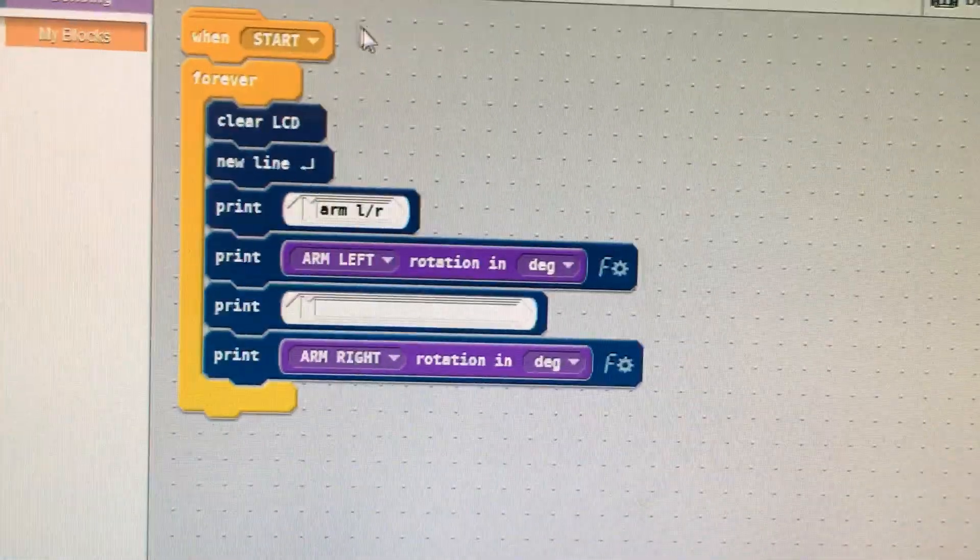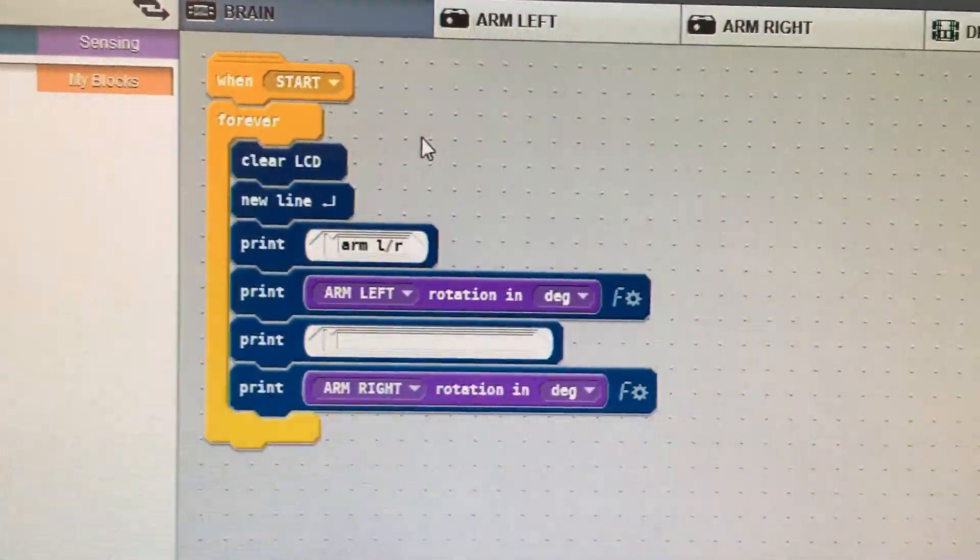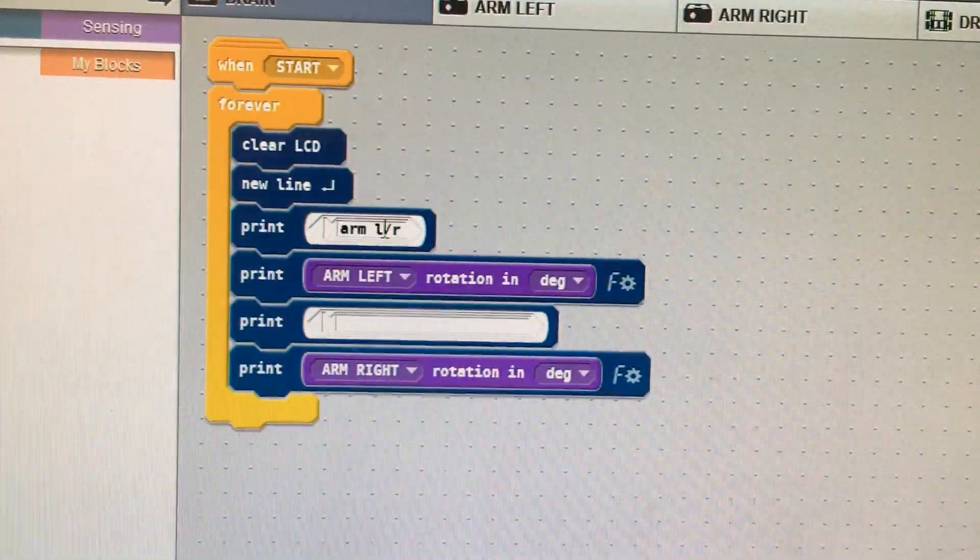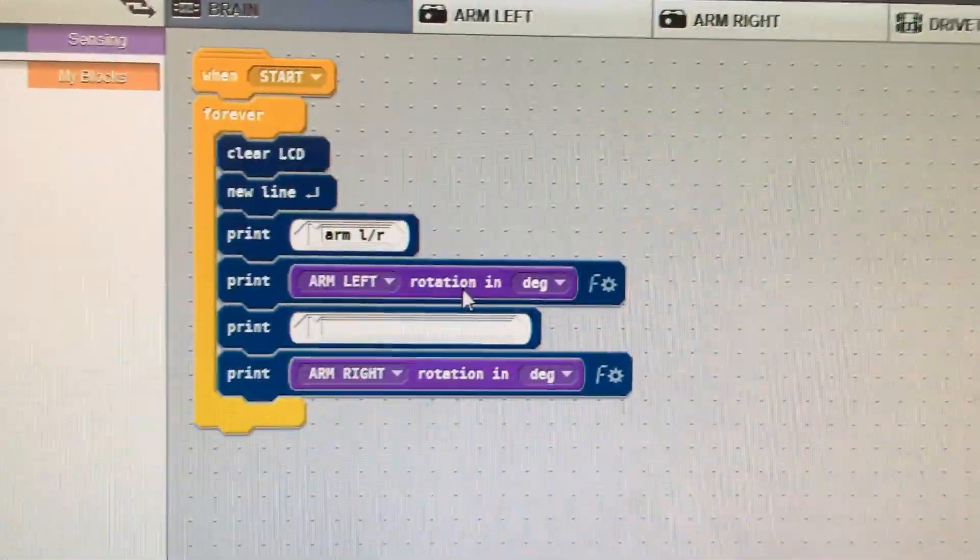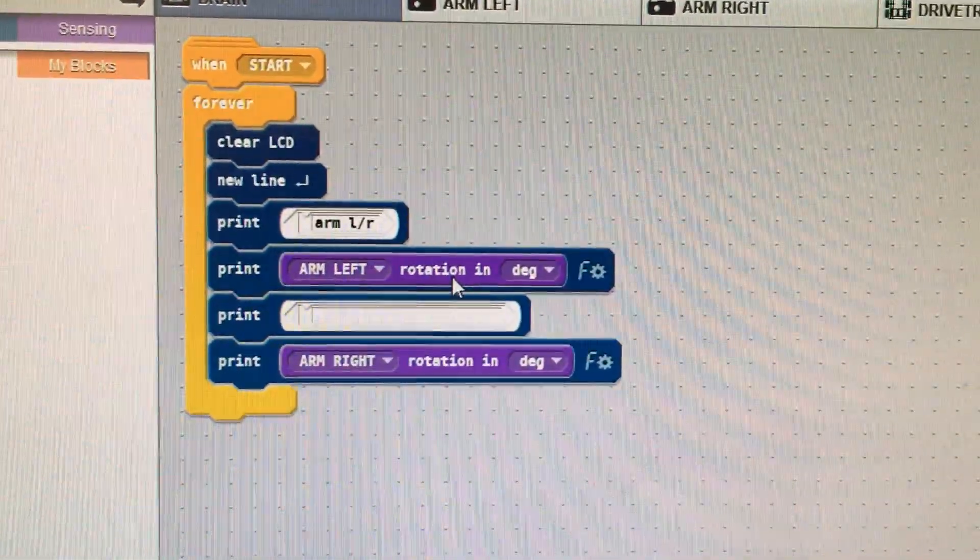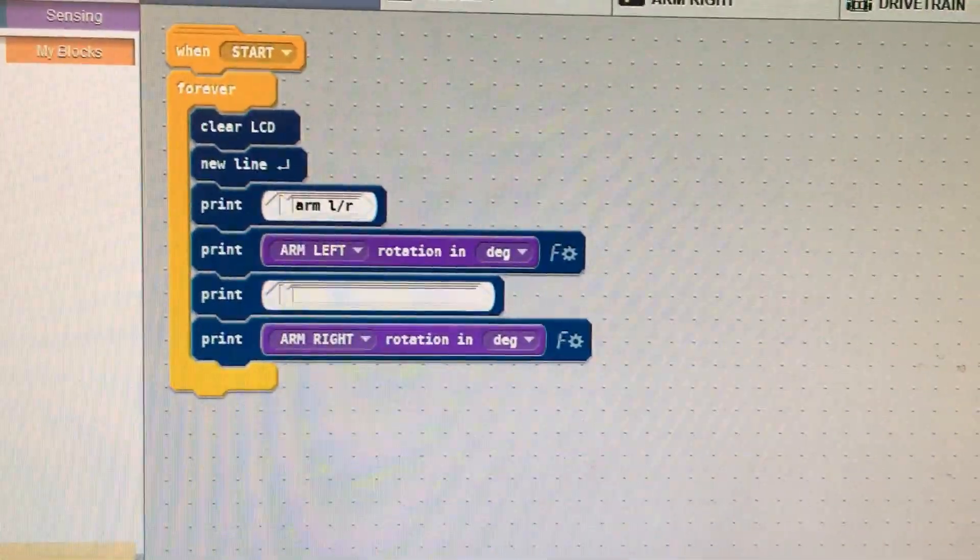All right, we come in here on the brain, and we want it to show us our arm degree rotations, so we know where the arm is at. Then let's jump over to the controller.